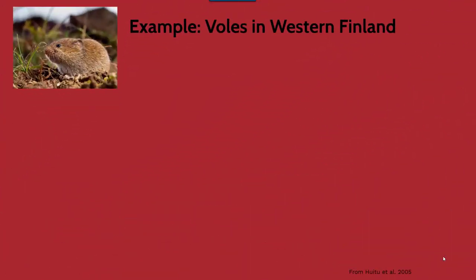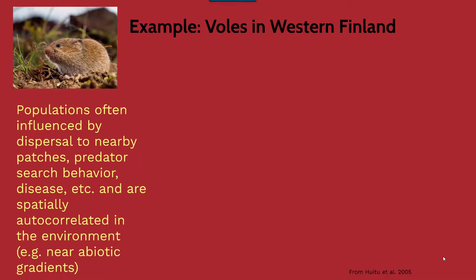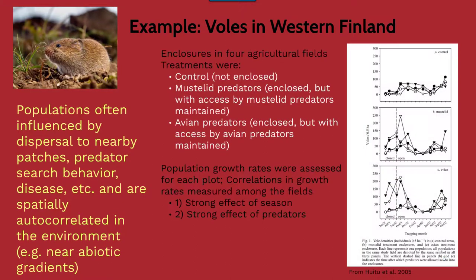As an example of voles in western Finland: populations are often influenced by dispersal to a nearby patch, predator search behavior, disease, and tend to be spatially autocorrelated in their environment to nearby abiotic gradients. In this study they looked at four different agricultural fields with a control group and two other fields where they examined mustelid predators as well as avian predators, looking at population growth rates within each plot as well as correlations in growth rate measured among the fields.